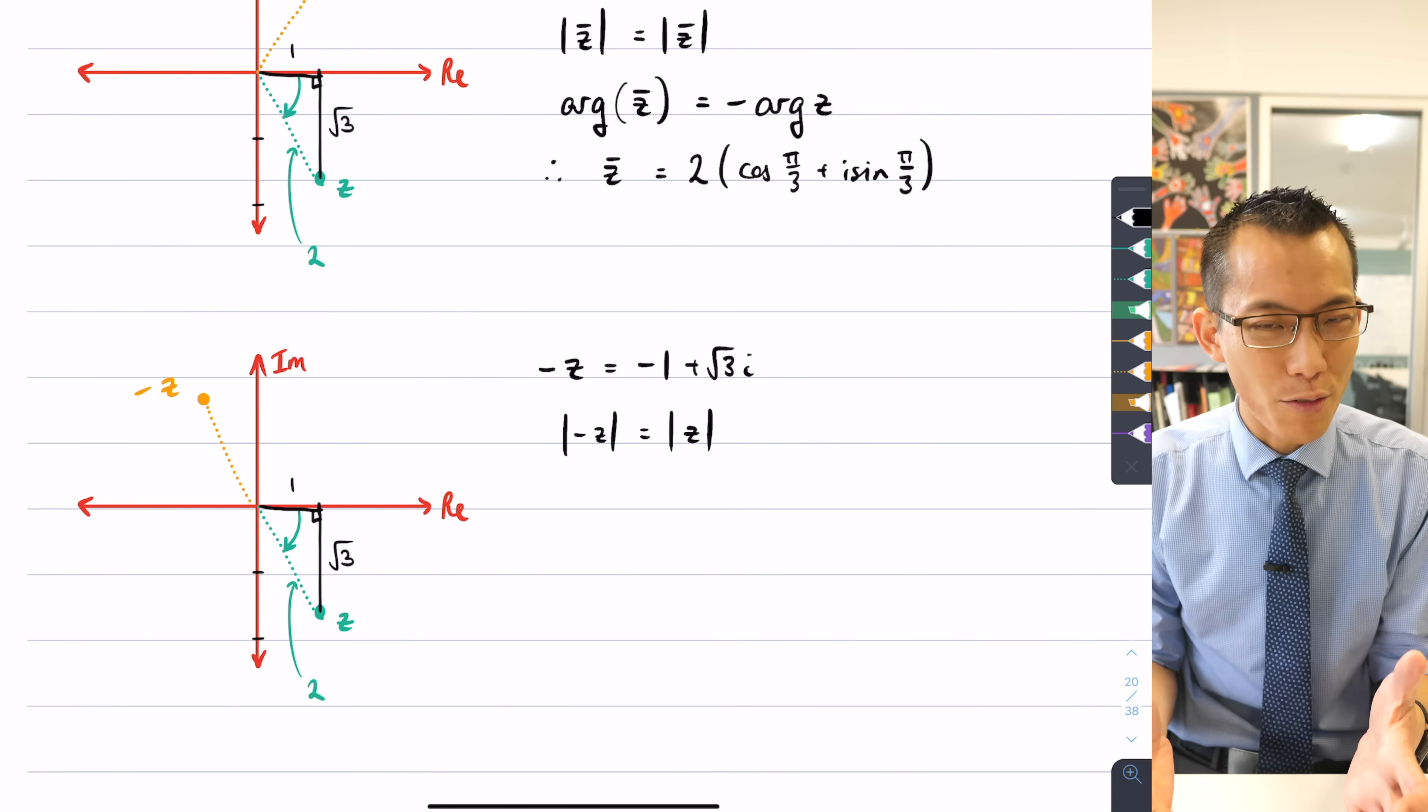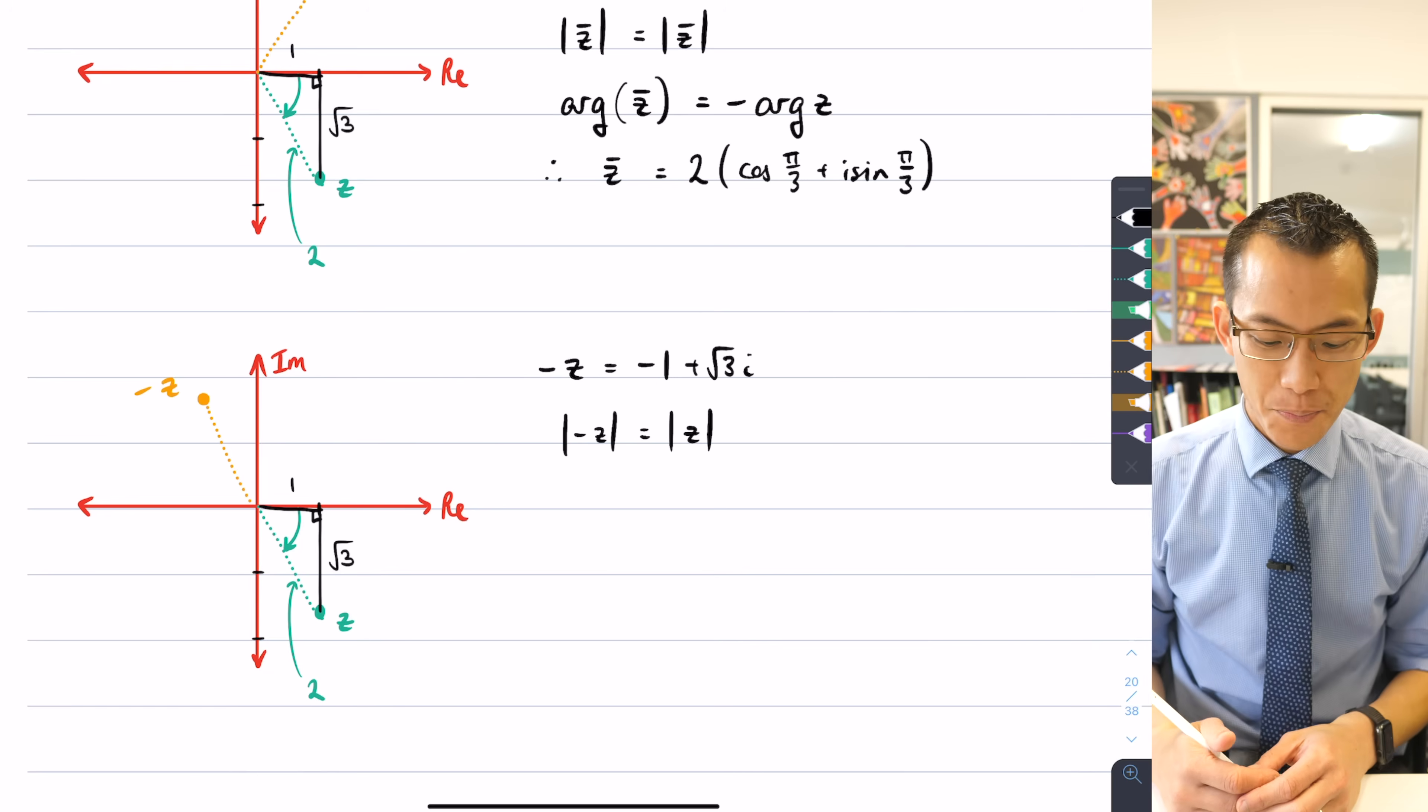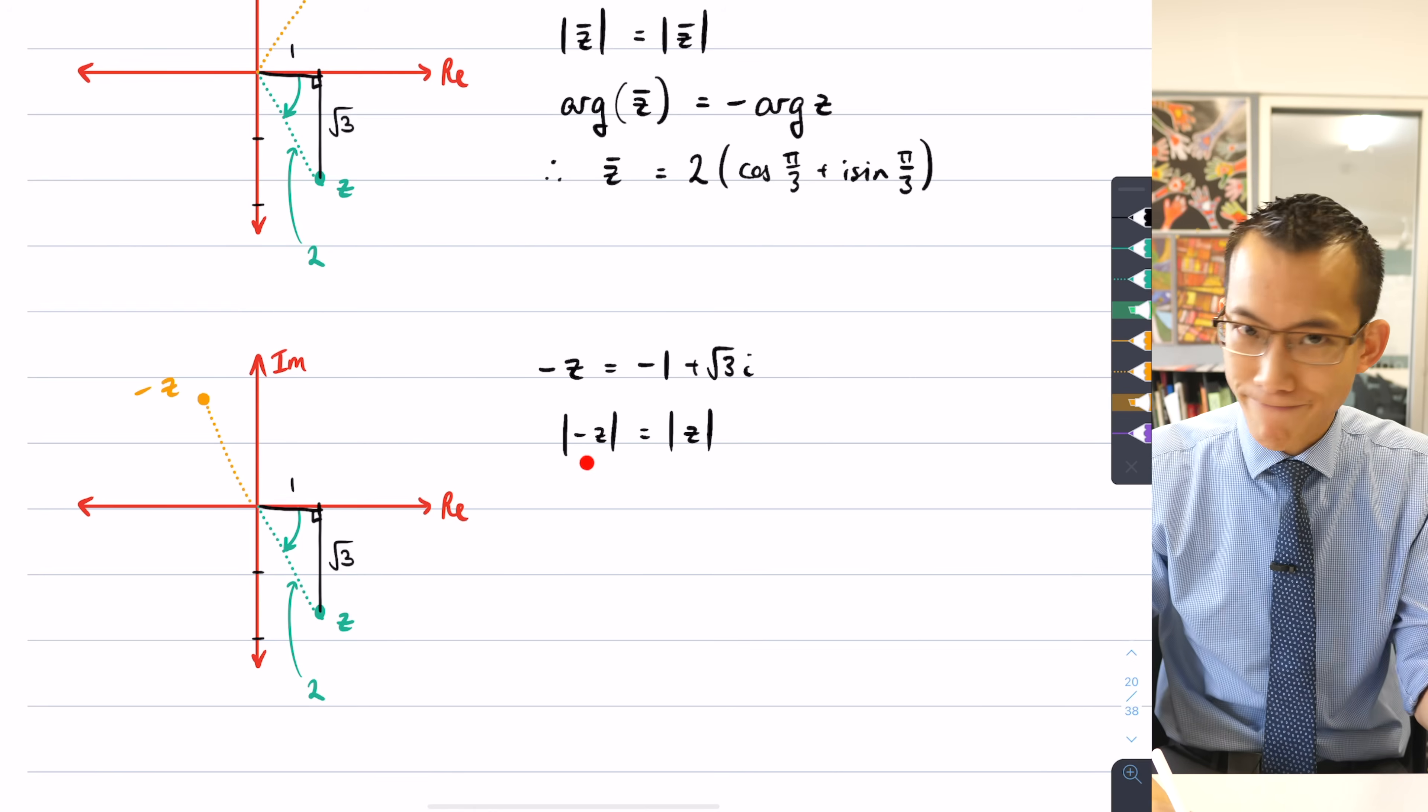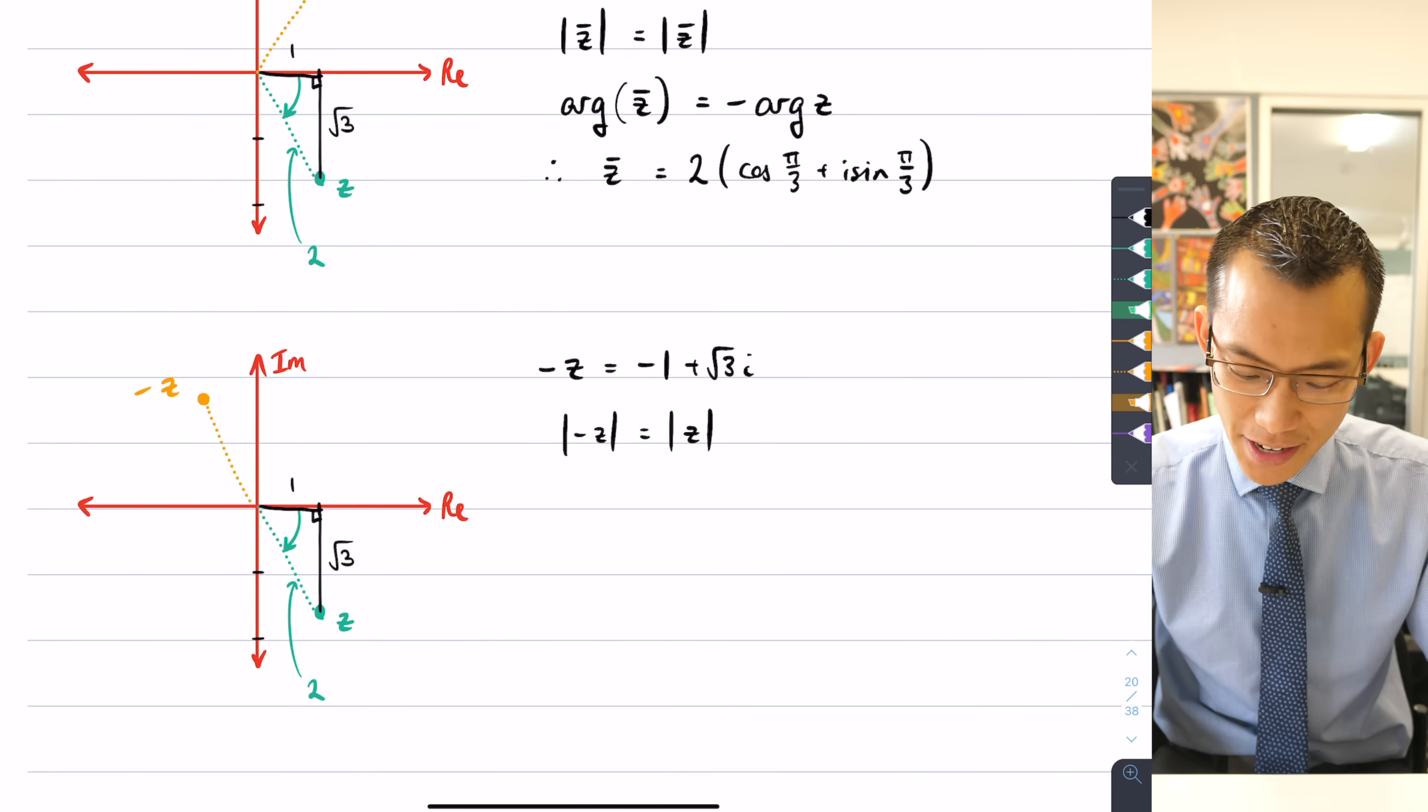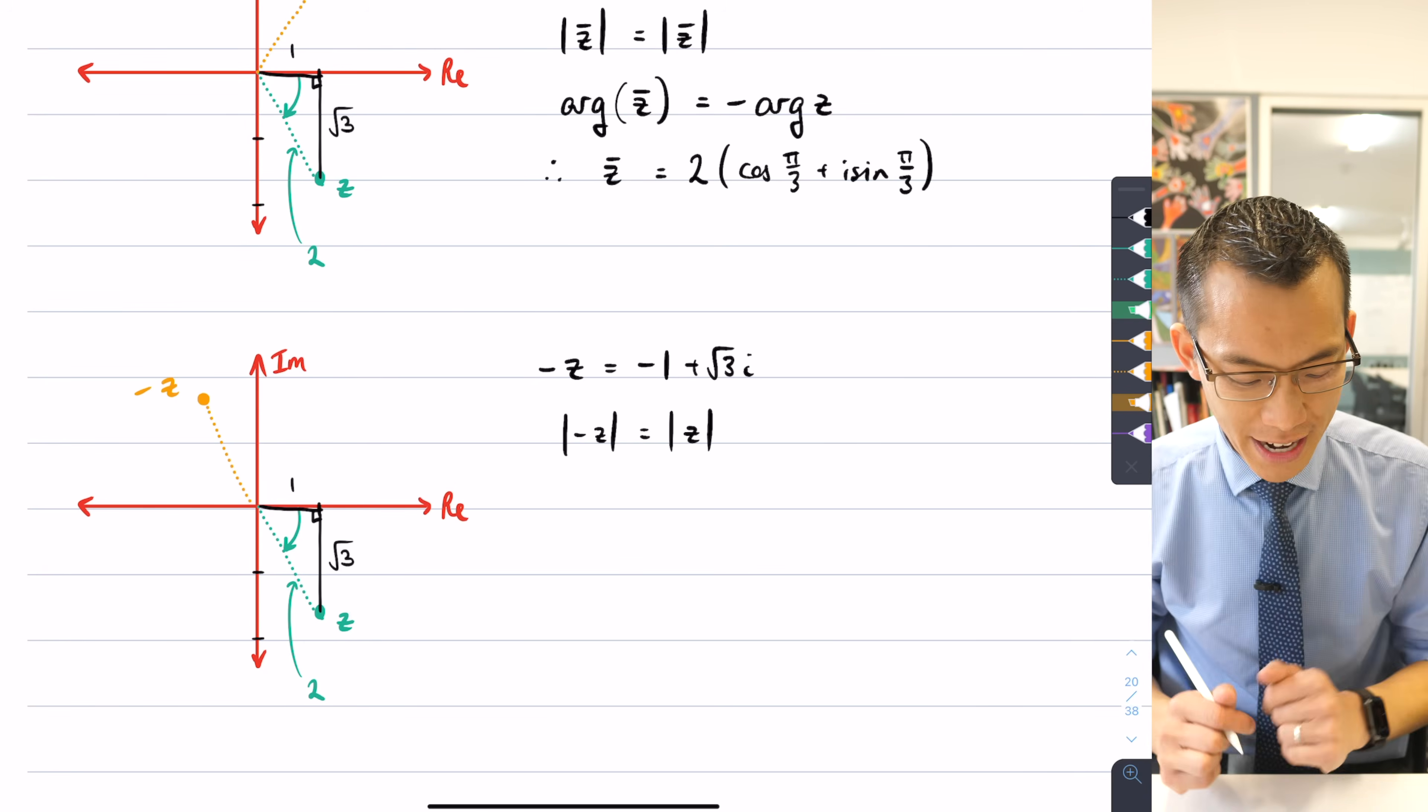because this is part of why we have the absolute value notation that we've used for the modulus. It doesn't matter if you're facing in that direction or that direction, a direction or its opposite, that doesn't change the difference, which is just like in real numbers. The absolute value of five is the same as the absolute value of negative five. So that's the same.